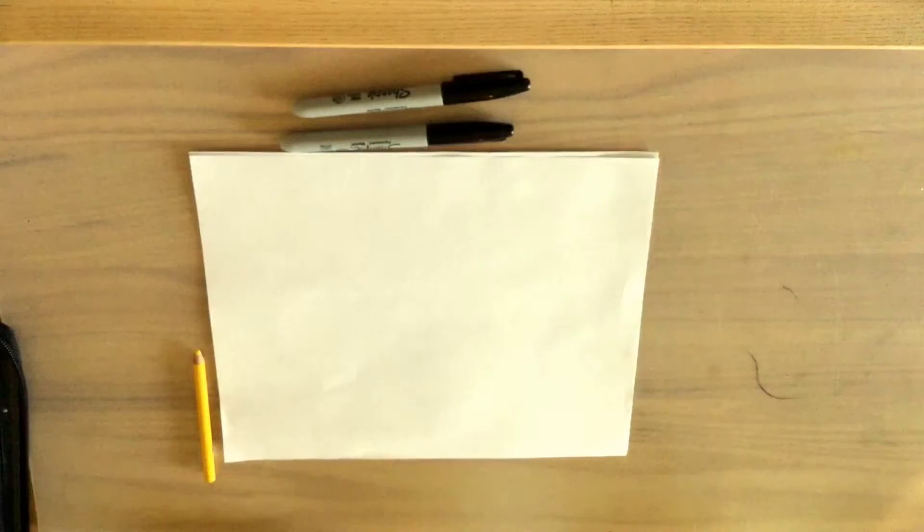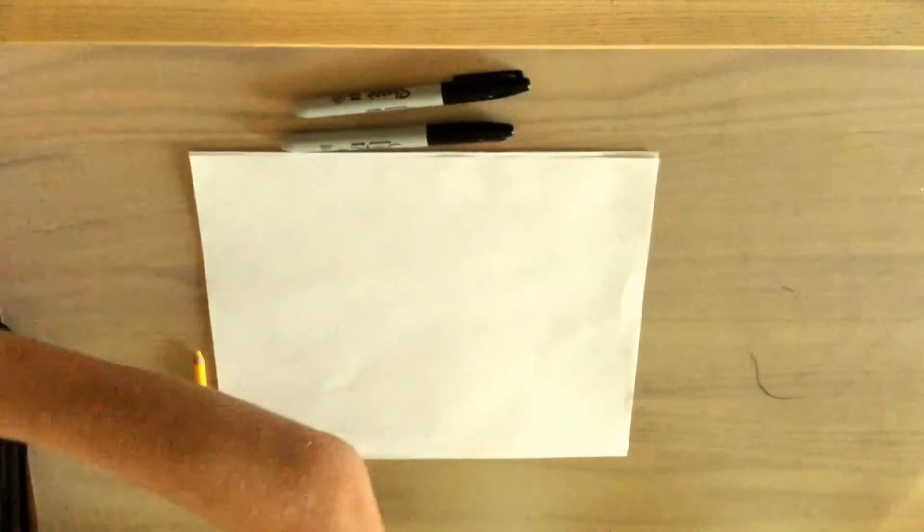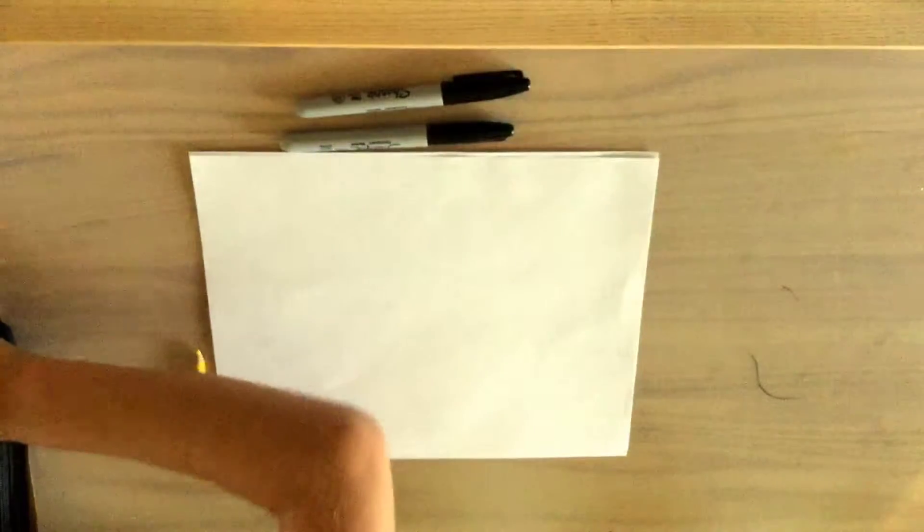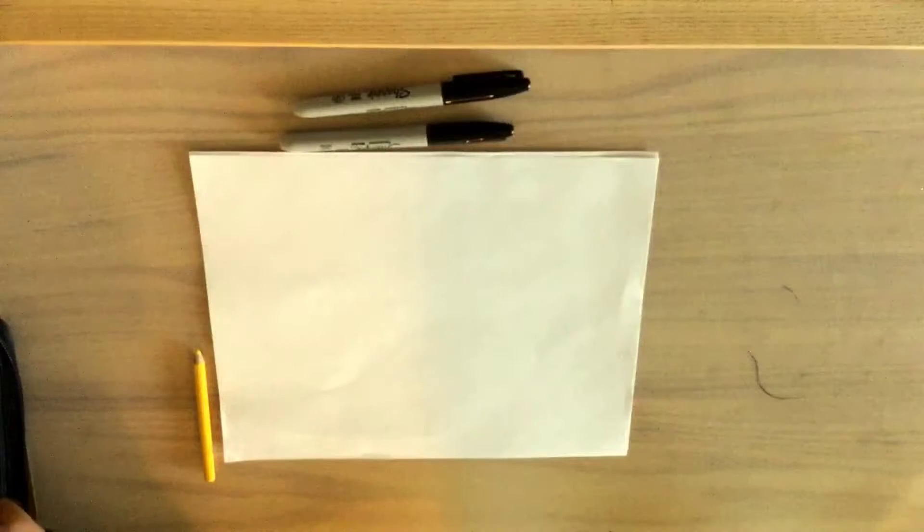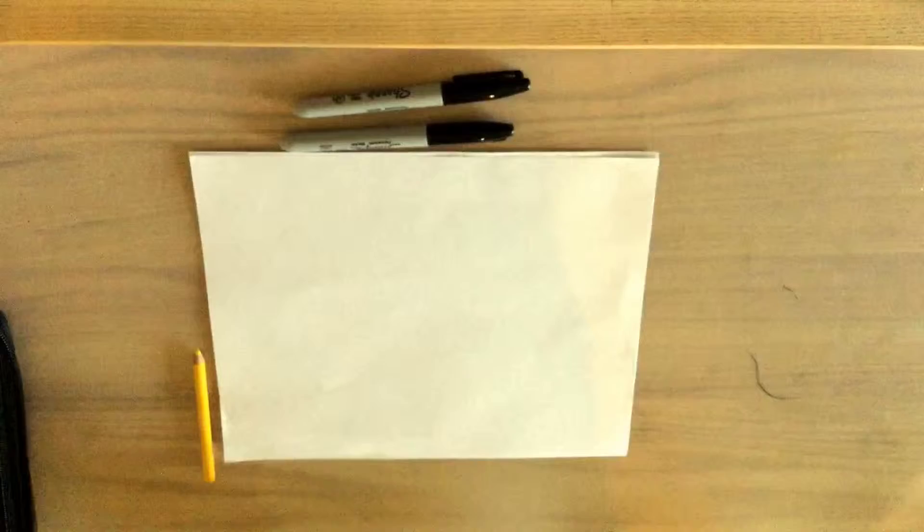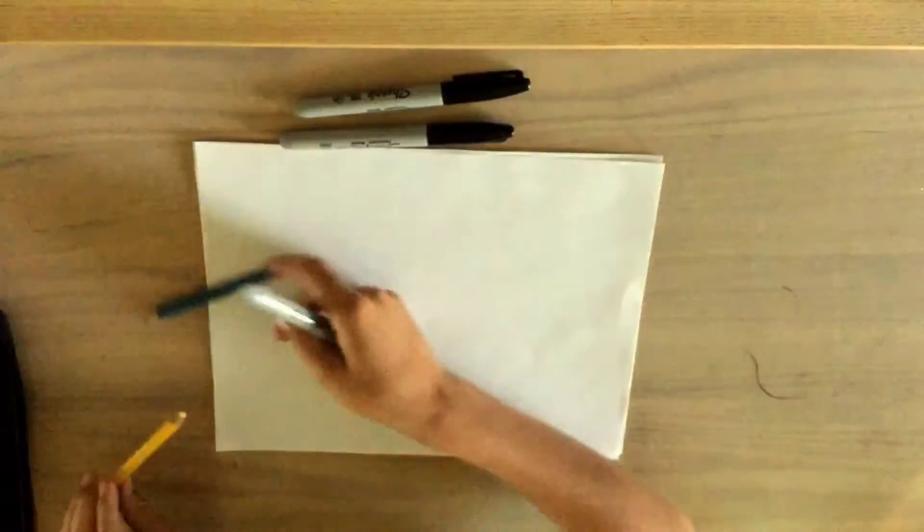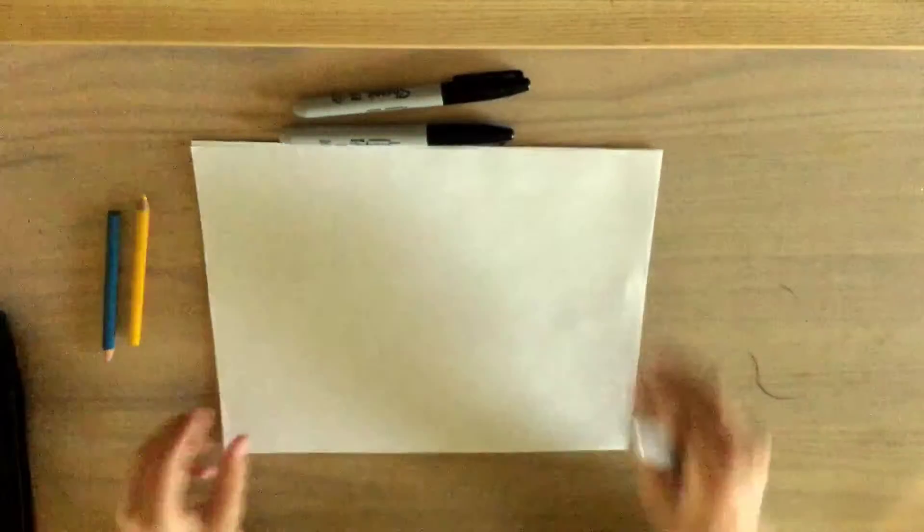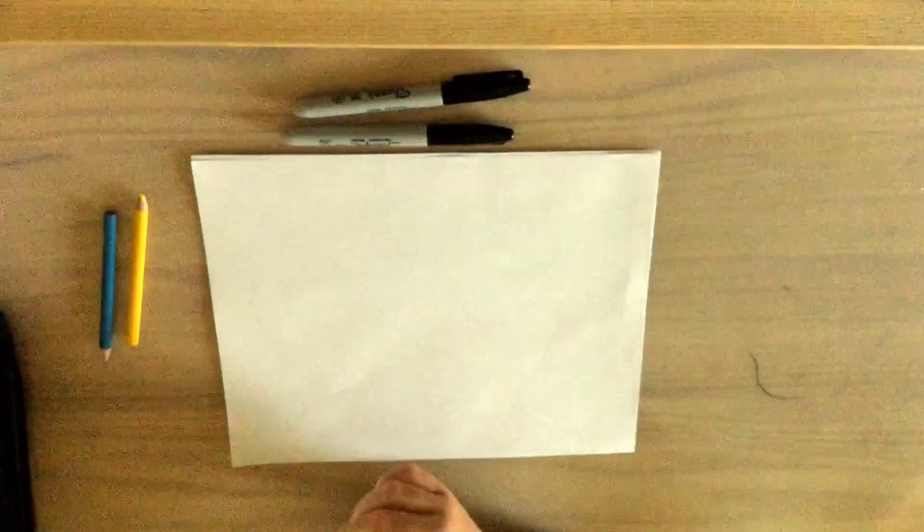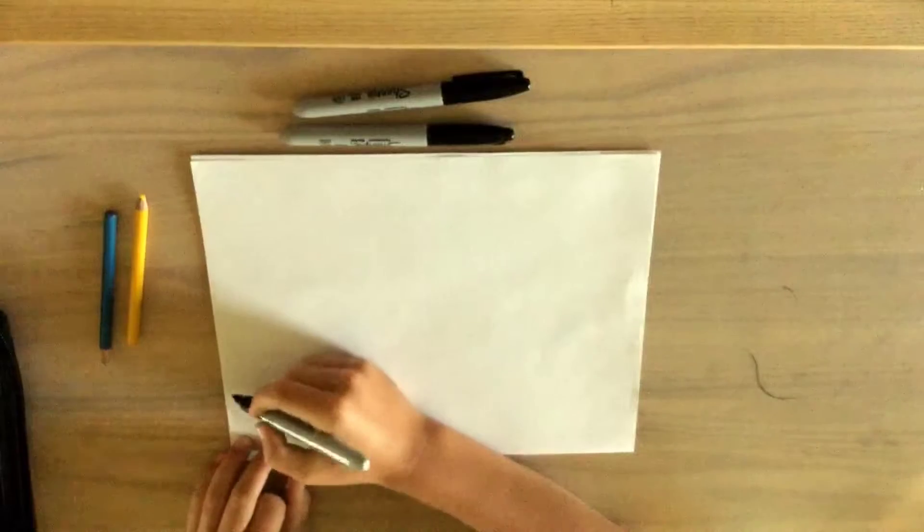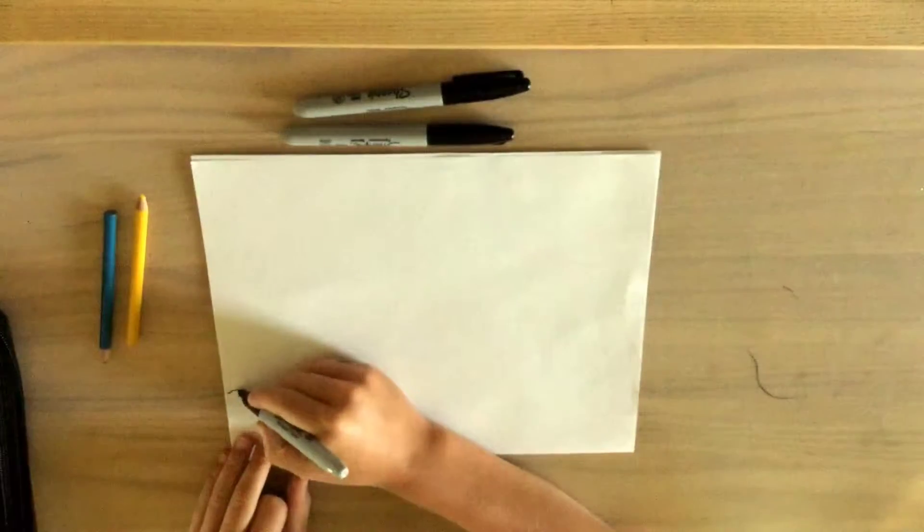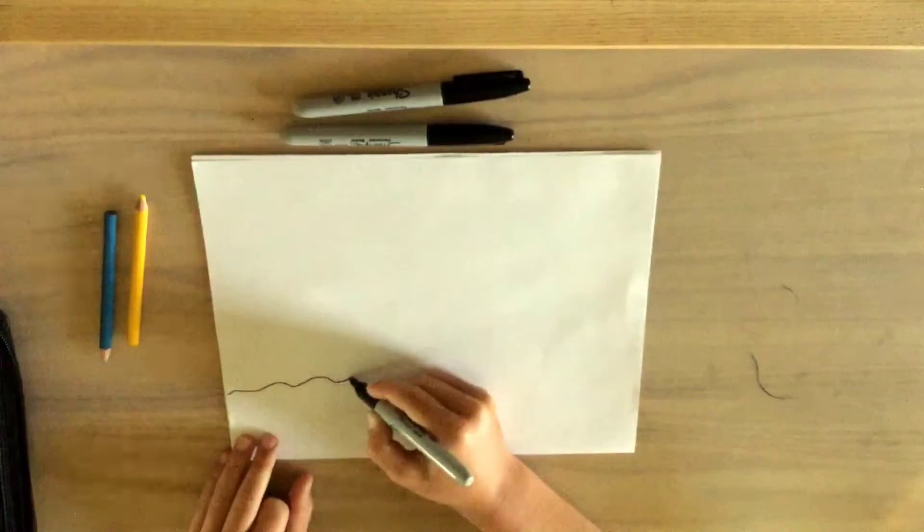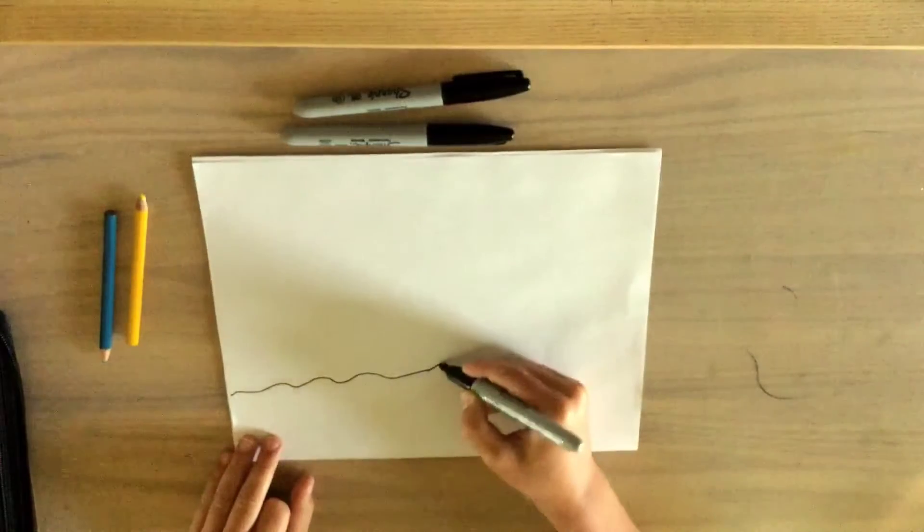Let me find the blue first. If you do have Prisma color, I am going to be using true blue and canary yellow. All right, so to start this video we're going to draw the ground. We're going to start at one side of the page and we're just going to draw a wavy line.